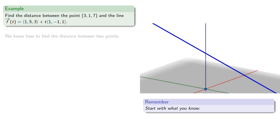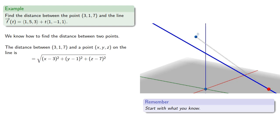We know how to find the distance between two points, and so the distance between the point (3, 1, 7) and some point (x, y, z) on the line is...